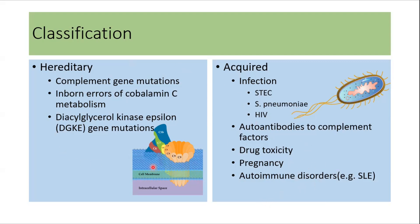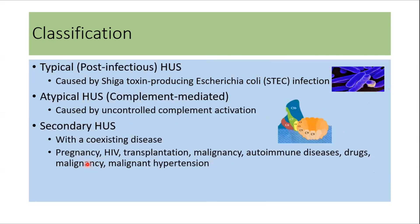This is the preferred classification. However, there is another classification frequently used in clinical practice, in which HUS is classified into typical HUS, which is post-infectious HUS, atypical HUS or complement-mediated HUS, and secondary HUS. Typical HUS usually occurs after infection with Shiga toxin-producing E. coli and other infections.